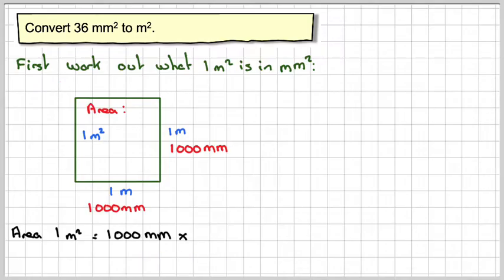1,000 millimeters by 1,000 millimeters, which is going to be 1,000,000 millimeters squared. So 1 meter squared is actually 1,000,000 millimeters squared.